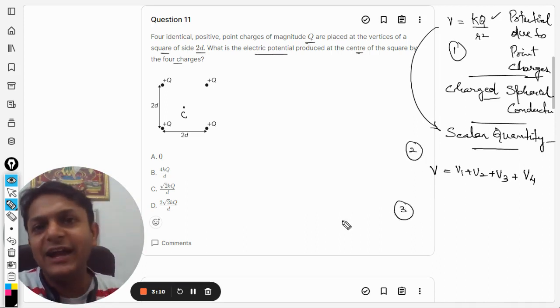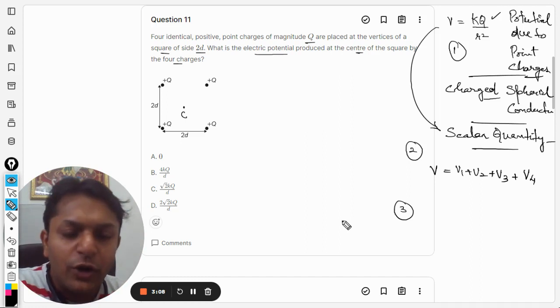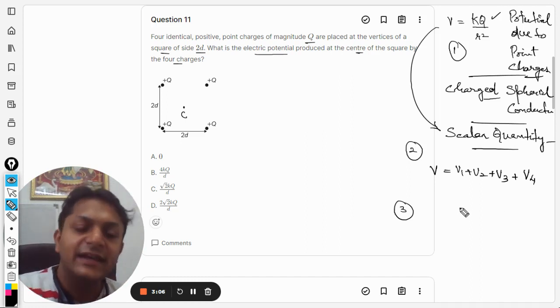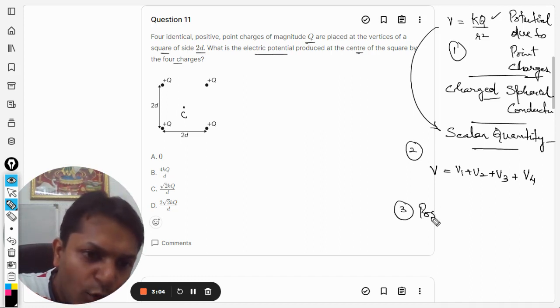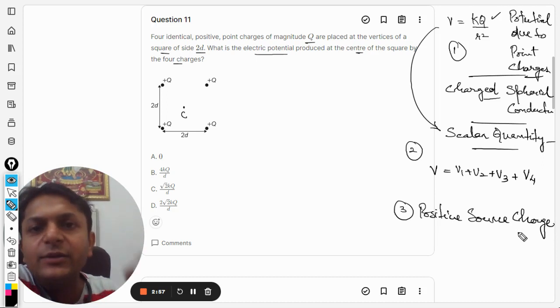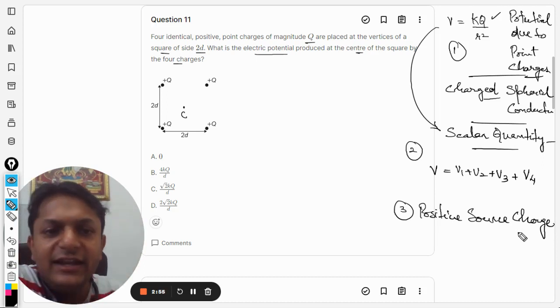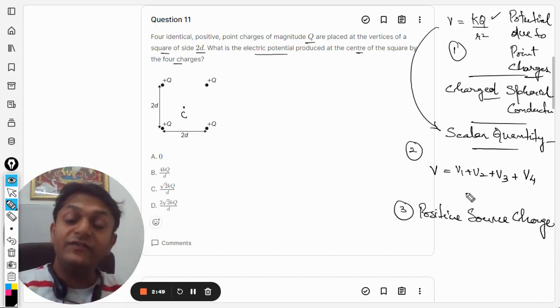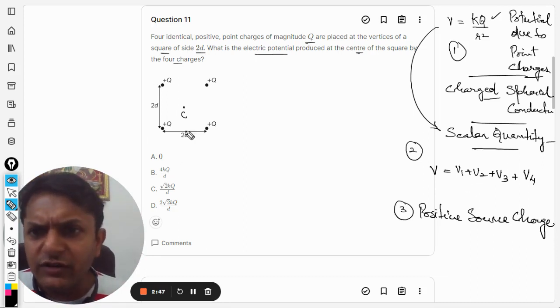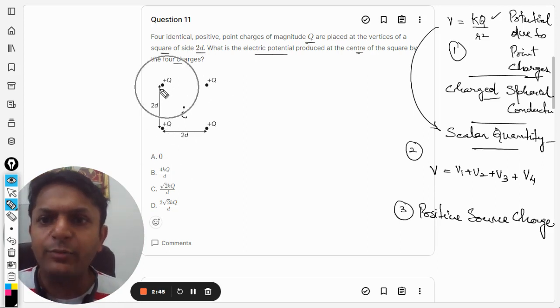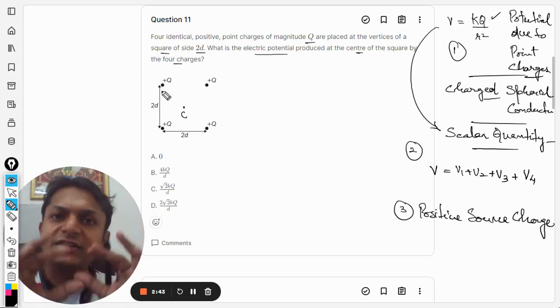Now the third point that we must be knowing before solving this question is that the positive source charge will create positive potential and negative source charge will create a negative potential. So in our case all of the charges are positive, so all would be casting positive potential.